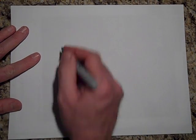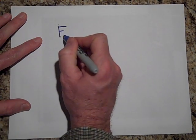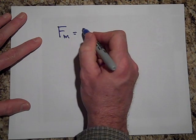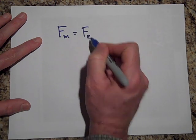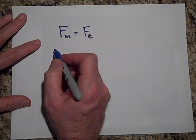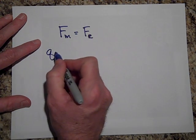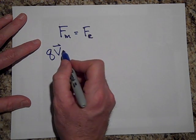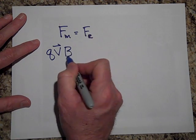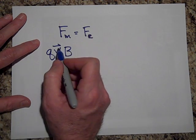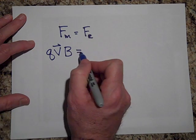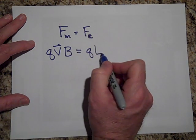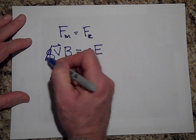In order to get those to balance out, we'd like the magnetic force to equal the electric force. So that would be, let's assume that the velocity is perpendicular to the field, so it's just QVB equals Q times E. The Q's cancel.